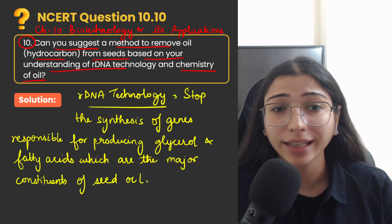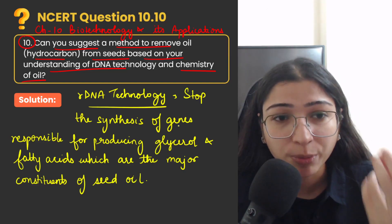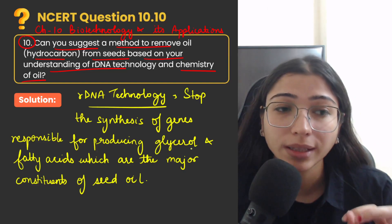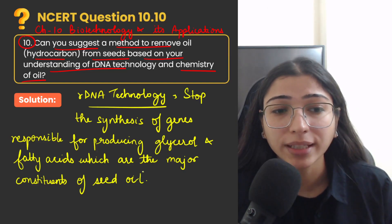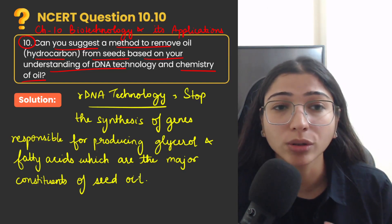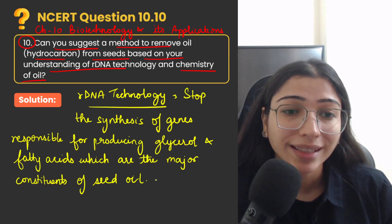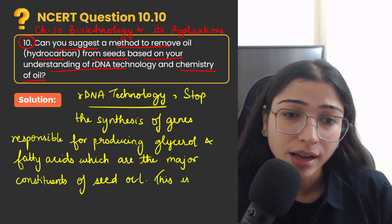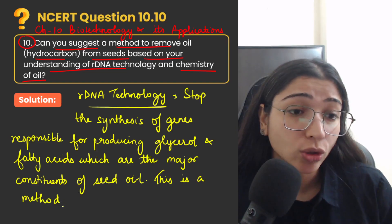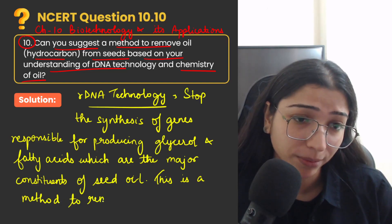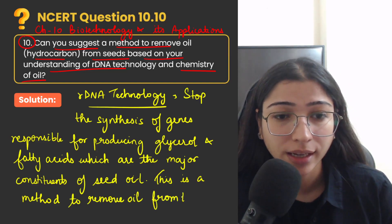Toh hum ne recombinant DNA technology ka use karke synthesis ko hi rok diya, genes ke expression ko hi rok diya jo responsible the glycerol aur fatty acids banane ke liye. So agar yeh components nahi banenge, seeds will also stop producing oil. This is a method to remove oil from the seeds.